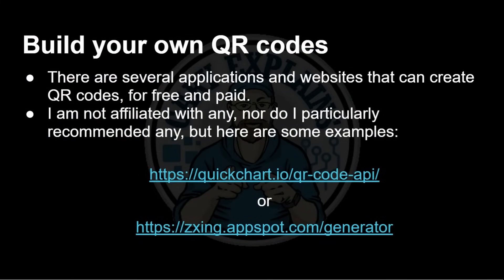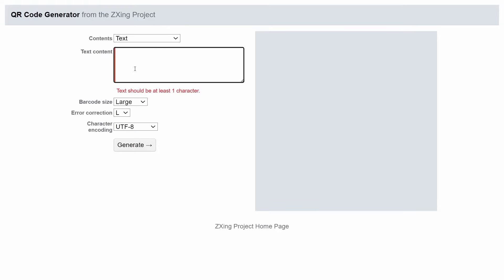If you want to build your own QR code, they're very useful — you can put them on business cards, use them in restaurants, or share Wi-Fi information with guests. There are lots of different ways to generate them: applications and websites that can generate QR codes for free, and some paid or subscription services. I'm not affiliated with any of them particularly, but here are two examples you can try to produce QR codes.